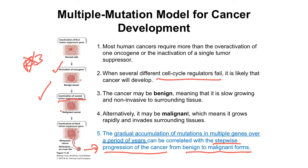Consider carefully how p53 controls or checks cell cycle progression, and think about the potential ways by which p53 activity can be inactivated or misregulated — in that way you can make predictions on how it can cause the formation of cancerous growth.